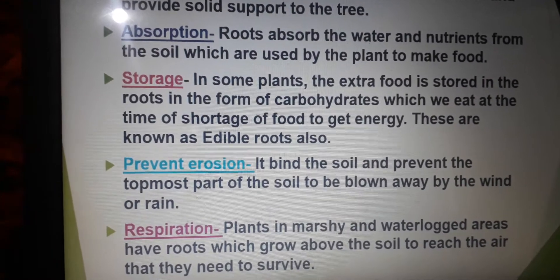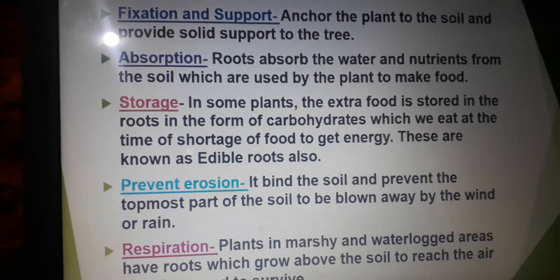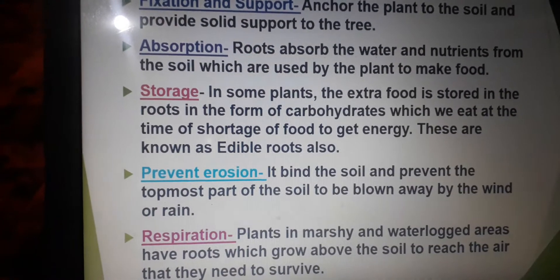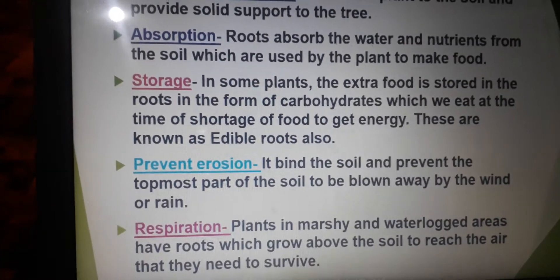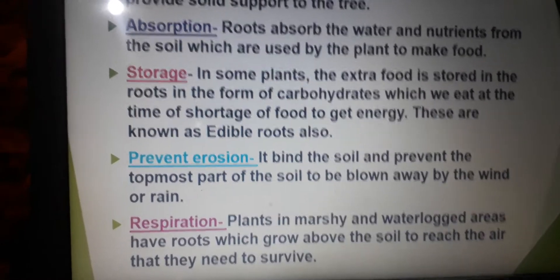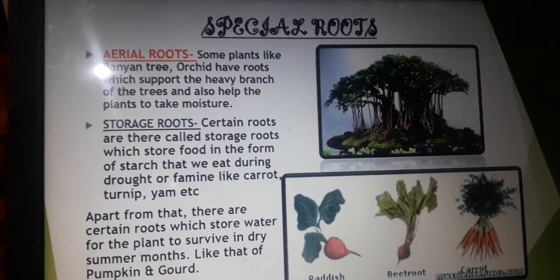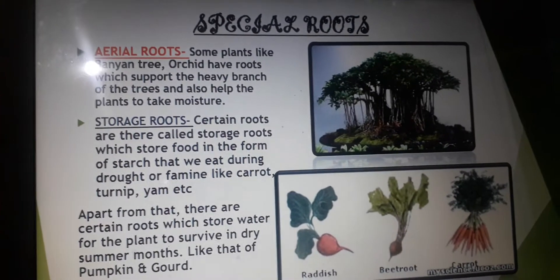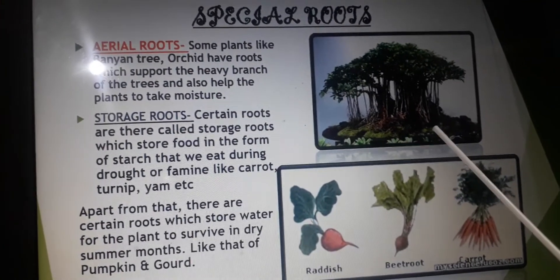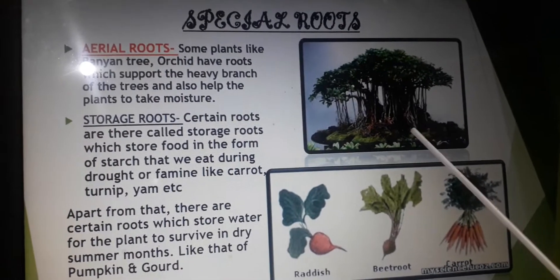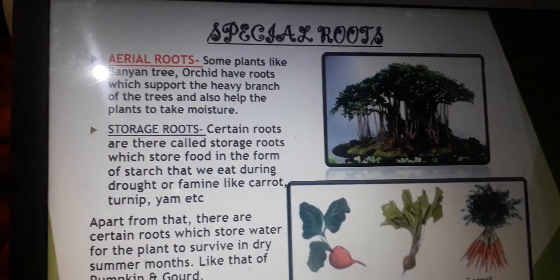So we have seen that apart from fixing the plant to the soil, roots also play a very important role in the growth of the plant. Besides the two basic types of roots, there are a few special roots also. The first special root is the aerial root. Aerial roots fix themselves to the ground and support the heavy branches of the tree. They also help the plant in taking moisture and in breathing, like the banyan tree and orchid.